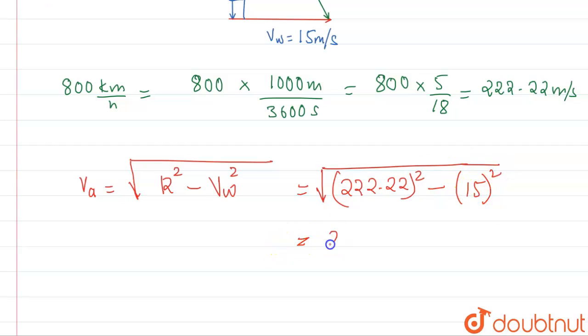So this will be equal to 221.71 meter per second. So this is the velocity of the plane, aeroplane.